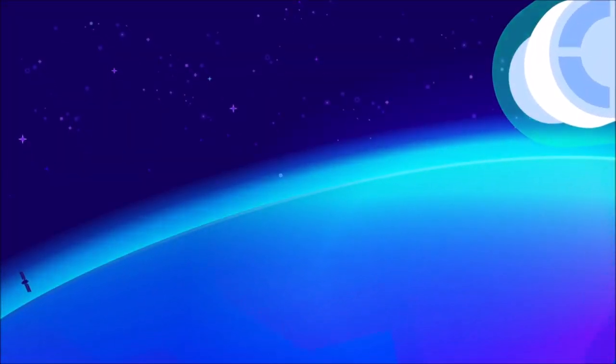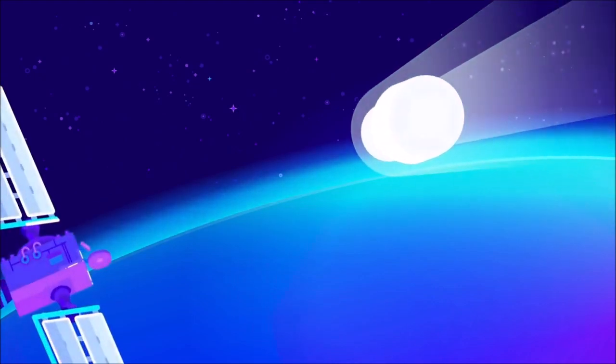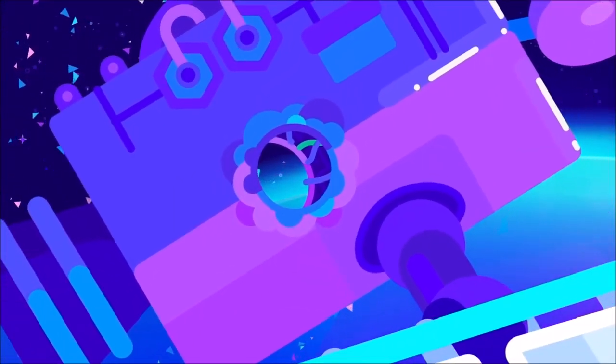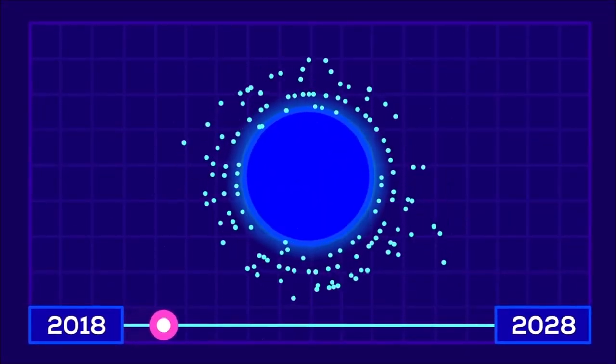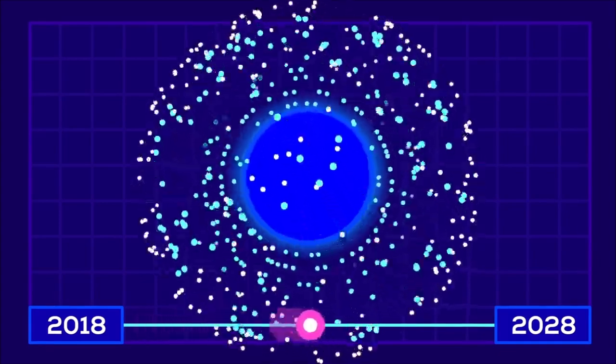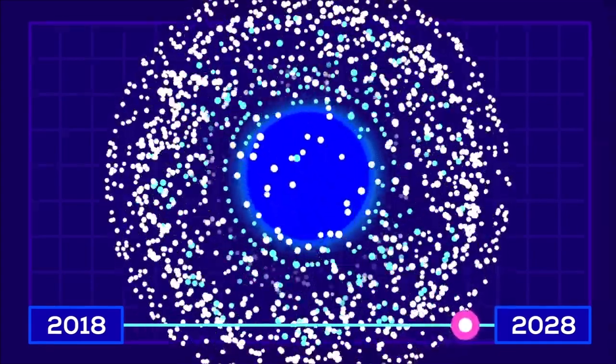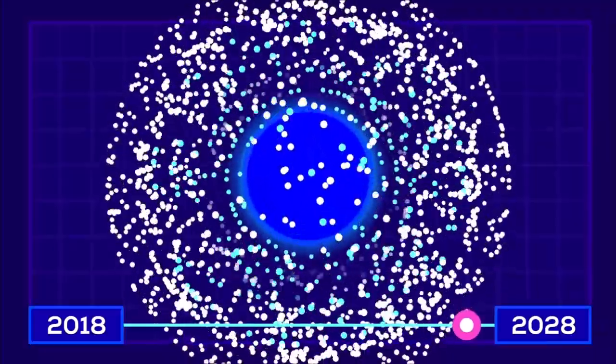If just one pea-sized bullet hits one of our 1,100 working satellites, it will be destroyed instantly. Three or four satellites are already being destroyed this way every year. As the number of satellites and the amount of junk in orbit is expected to grow tenfold in the next decade, we're approaching a tipping point.